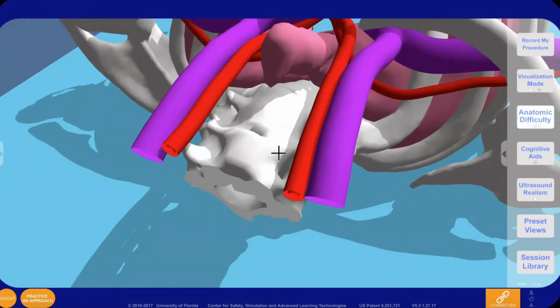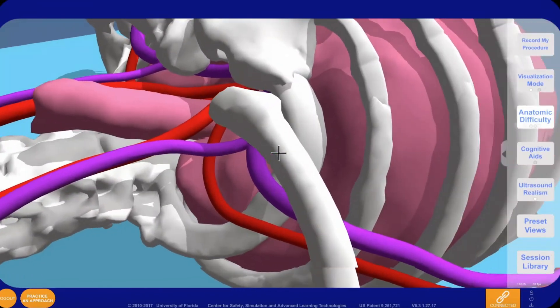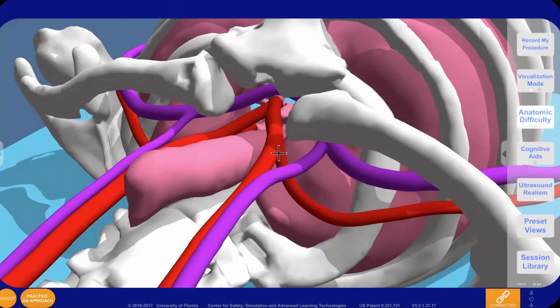The level of difficulty can be varied by increasing or decreasing the diameter of the veins. This can simulate patient position or hypovolemia.